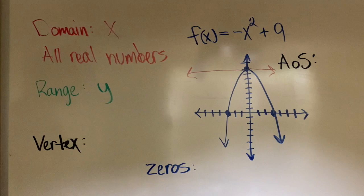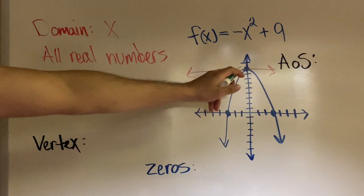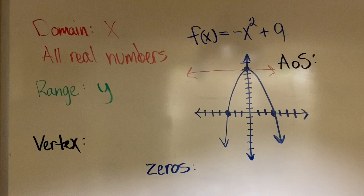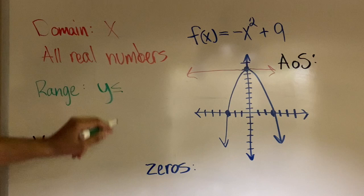It goes down to negative infinity. It never stops, which means that y can be any number that's 9 or below 9. Below basically meaning less than, so any number that's 9 or less than 9, making it less than or equal to 9.